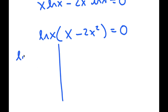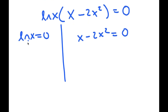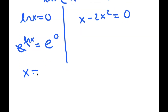So this gives me two equations: ln x equals 0, and x minus 2x squared equals 0. For ln x equals 0, I'm going to take e to the power of both sides, so these two cancel out and I get x is equal to e to the power of 0, which is 1.